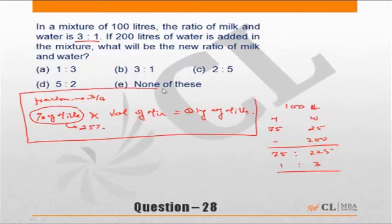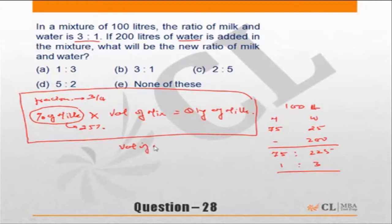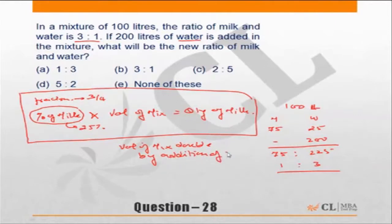Fraction of milk multiplied by volume of the mixture gives you the quantity of milk. Now if the volume of mixture doubles, the percentage or fraction of milk should become half, because the quantity of milk remains constant. In this question, you are adding water, so volume of mixture doubles by addition of water — this is the important part to remember.